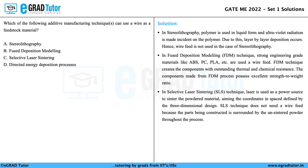In the case of selective laser sintering technique, a laser is used as a power source to sinter the powdered material, aiming at coordinates in space defined by the three-dimensional design. Selective laser sintering technique does not need a wire feed because the parts being constructed are surrounded by the un-sintered powder throughout the process.